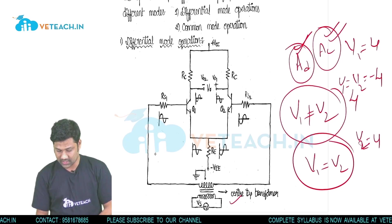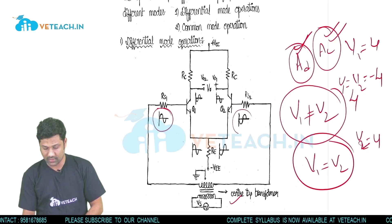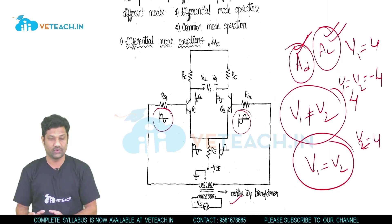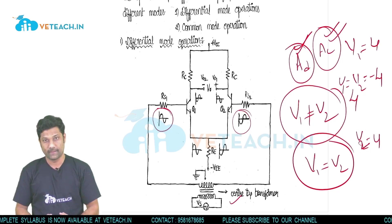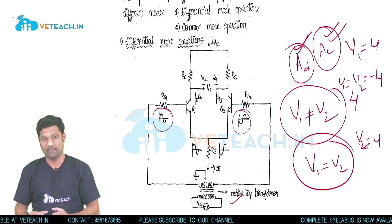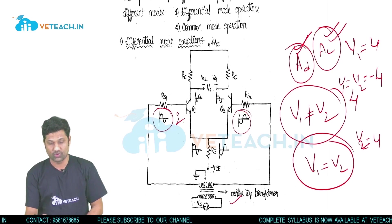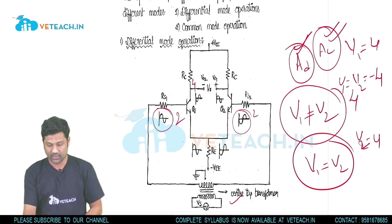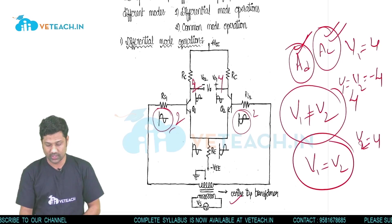From the center-tapped transformer, we get one signal with a positive then negative cycle, and another signal with a negative then positive cycle. These inputs are provided to transistors Q1 and Q2. The two transistors Q1 and Q2 must be matched — the properties of Q1 should equal the properties of Q2. When both transistors have equal properties and receive the same input, their amplification process is also the same.